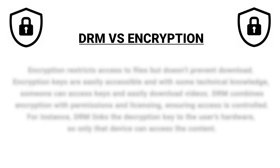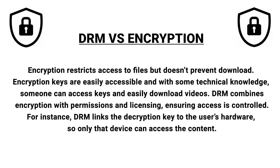DRM versus encryption: encryption restricts access to files but doesn't prevent downloads. Encryption keys are easily accessible, and with some technical knowledge someone can access keys and easily download videos. DRM combines encryption with permissions and licensing, ensuring access is controlled. For instance, DRM links the decryption key to the user's hardware so only that device can access the content.